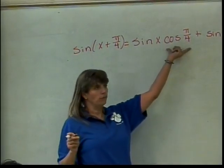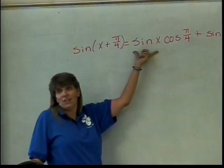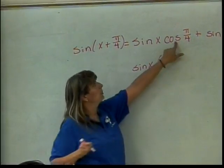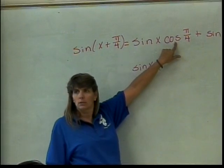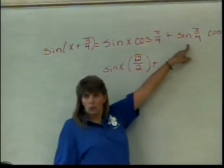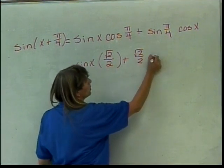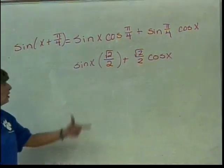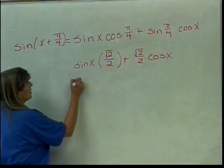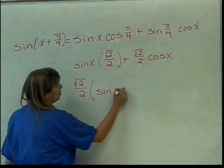Now, cosine of pi over 4 I know, sine of pi over 4 I know. Sine of x I don't know, I can't do anything with that. So this is still going to be the sine of x. What's the cosine of pi over 4? Radical 2 over 2. What's the sine of pi over 4? Square root of 2 over 2. And then I can't do anything with the cosine of x, it's still going to be the cosine of x. So this is one possible answer.